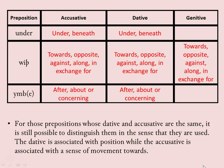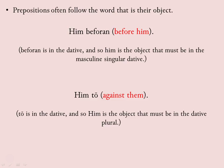For those prepositions whose dative and accusative forms are the same, it is still possible to distinguish them by their sense: the dative is generally associated with position, while the accusative is generally associated with movement towards something, someone, or some event. Prepositions often follow the word that is their object — for example, 'him beforan,' meaning 'before him.' 'Him' is in the dative plural, meaning 'them,' and is the object of the preposition.